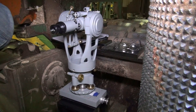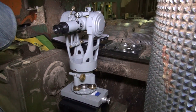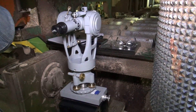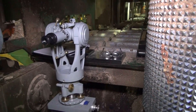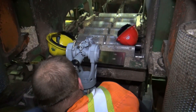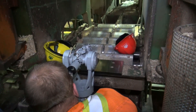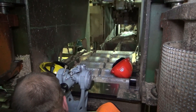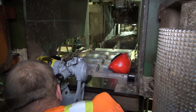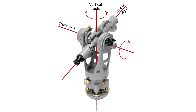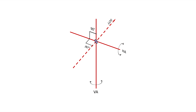The Brunson instrument we will use in this alignment process is called the jig transit. Specific geometric relationships exist between its mechanical and optical axes that allow it to sweep very precise horizontal and vertical planes. The axes are mutually perpendicular and intersect at a common point.